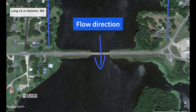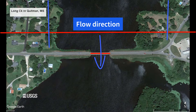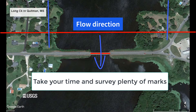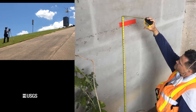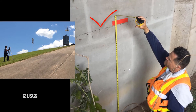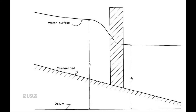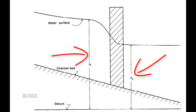Finally, shoot the high watermarks throughout the approach upstream of the contracted section. It is important to remember that the high watermarks will be the sole representation of both the Section 1 and Section 3 surface water elevations, so take your time and survey plenty of marks. Once you have shot the high watermarks and determined they are sufficient for a contracted opening measurement, you may begin measuring the channel geometry. It does not matter whether you start at the bridge or the approach section, as long as they are tied to the same reference datum.